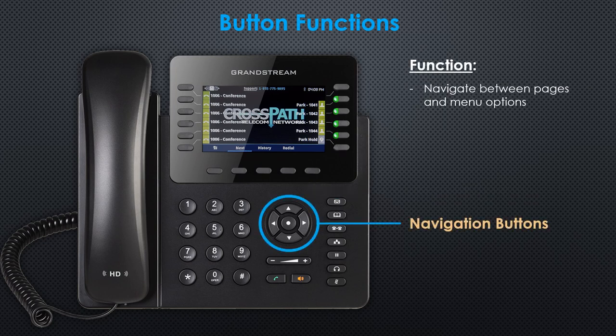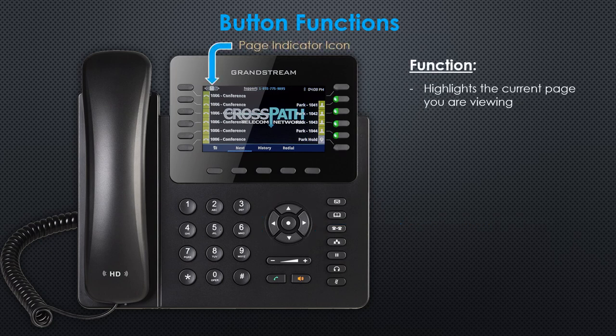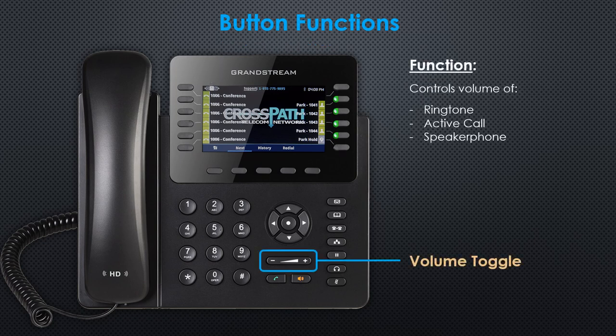The circular set of buttons are your navigation buttons. These buttons will allow you to scroll between pages and menu options. The page indicator icon at the top left of your screen highlights the current page you are viewing. The volume toggle will adjust the volume of your ringtone, active call, as well as your speakerphone.